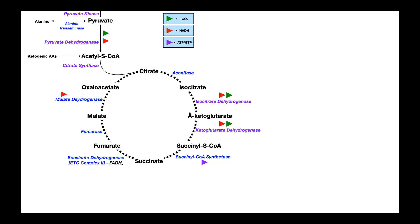Welcome back to Biochemistry on Catalyst University. My name is Kevin Tokoff. In this video, we're going to continue on with our overview of metabolism and pick up where we left off, which is at the production of pyruvate, which occurs at the end of glycolysis.